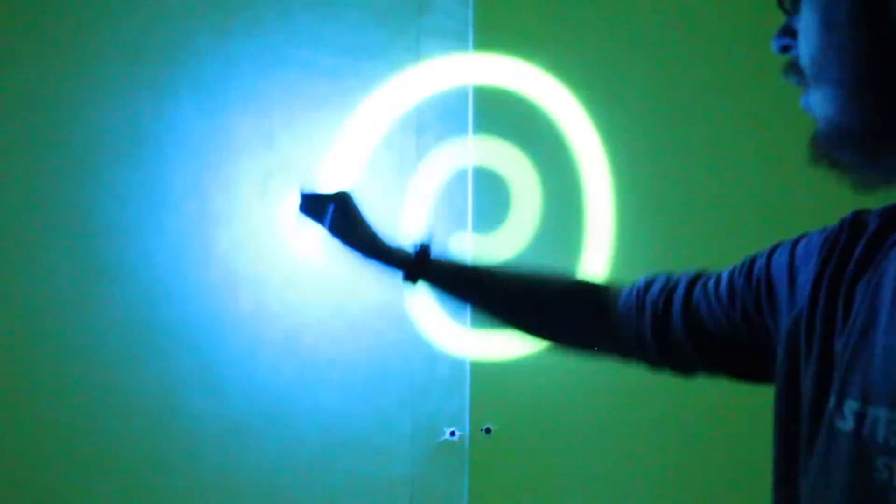Those of you who have been to AstroCamp may recognize our glow-in-the-dark wall from our class about lights and lasers. The scientific phenomenon that's happening is called phosphorescence.